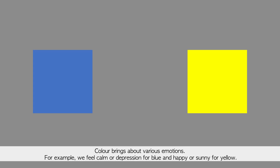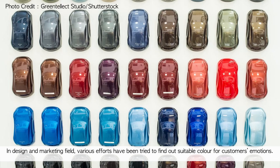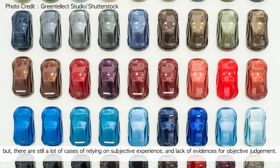Color brings about various emotions. For example, we feel calm or depression for blue, and happy or sunny for yellow. When combining those two colors, it evokes another feeling. We call this situation color emotion. In design and marketing fields, various efforts have been tried to find suitable colors for customers' emotions, but there are still many cases relying on subjective experience and a lack of evidence for objective judgment.